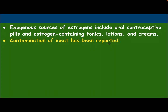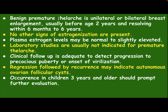Benign premature thelarche is unilateral or bilateral breast enlargement, usually before the age of 2 years, resolving within 6 months to 6 years. No other signs of estrogenization are present. Plasma estrogen level may be normal to slightly elevated. Laboratory studies are usually not indicated for premature thelarche; clinical follow-up is adequate to detect progression to precocious puberty or onset of virilization. Regression followed by recurrence may indicate autonomous ovarian follicular cysts. Occurrence in children 3 years and older should prompt further evaluation.